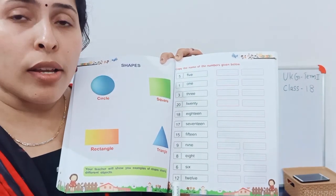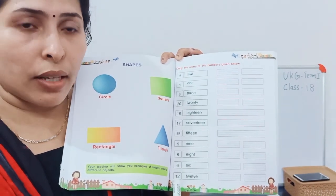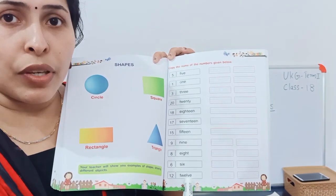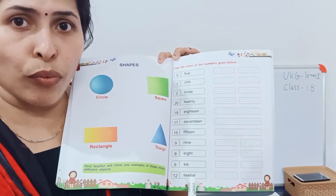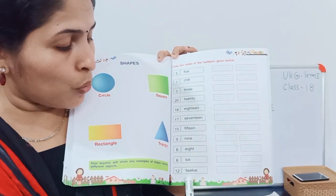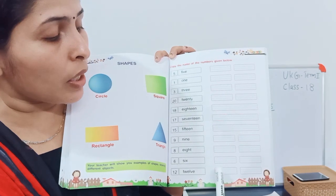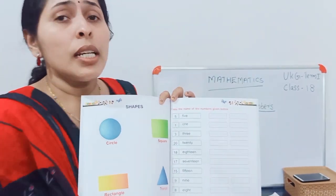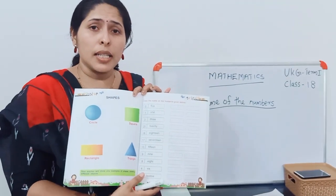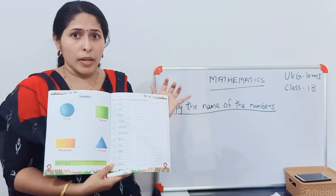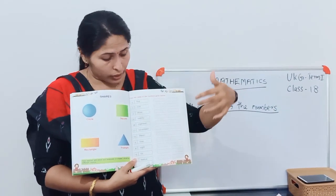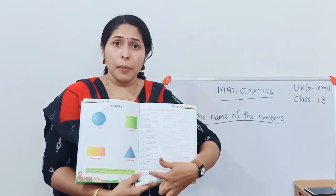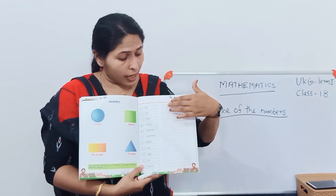Next one is 12. T.W.E.L.V.E. 12. This is 12. This is on the 4-line. If you want to do this activity, you can use the 4-line.